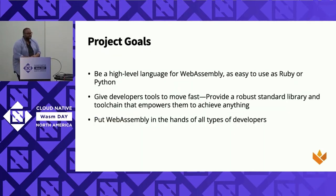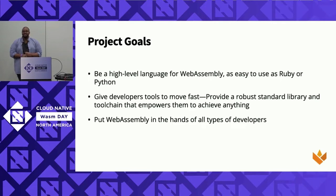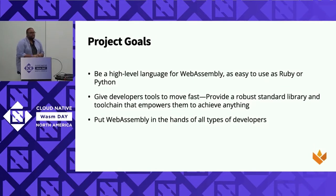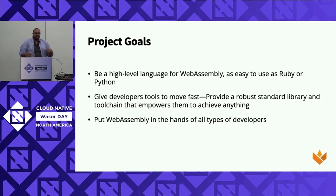What are the goals of the project? We aim to be a high-level language for WebAssembly. Right now a lot of the languages that work great for WebAssembly are C and Rust. These languages are fantastic and awesome, but they can have high learning curves and can be scary for a lot of developers. So we want to make it as easy as possible for people to get involved, just like Ruby or Python. We want to give developers tools to move fast — that means a robust standard library. We also want to make sure you have awesome tooling. Brand new languages often don't have the tooling in place, so we've worked on tools like a formatter and a language server.